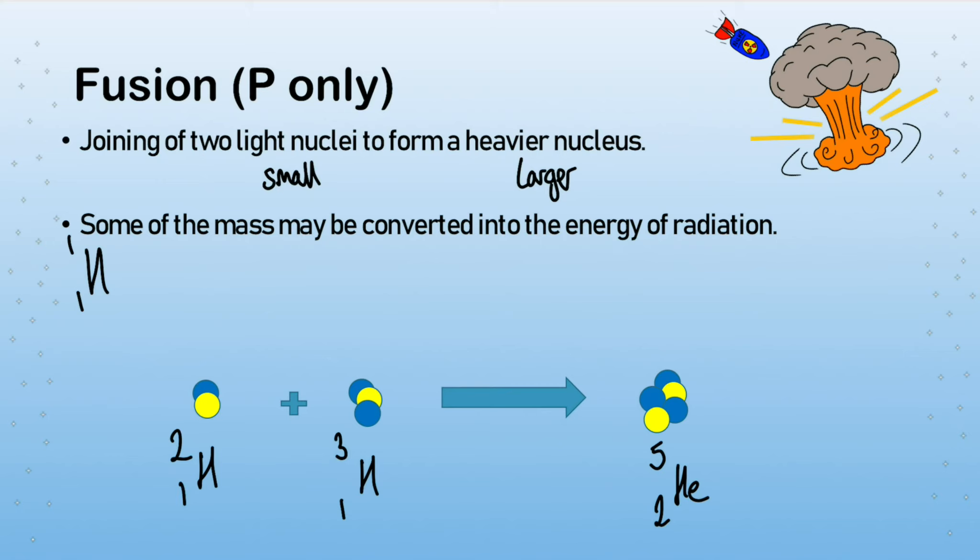So that's an example of nuclear fusion. There are lots and lots and lots of examples of this that can happen. But in essence what you need to know is just that nuclear fusion is a joining of two light nuclei to form a heavier nucleus. And this can happen in multiple ways usually in stars. In stars we get small nuclei fusing together to make larger nuclei.